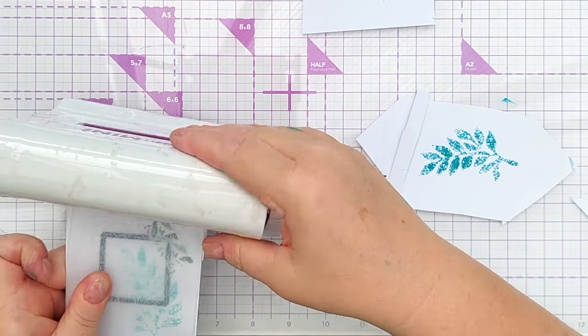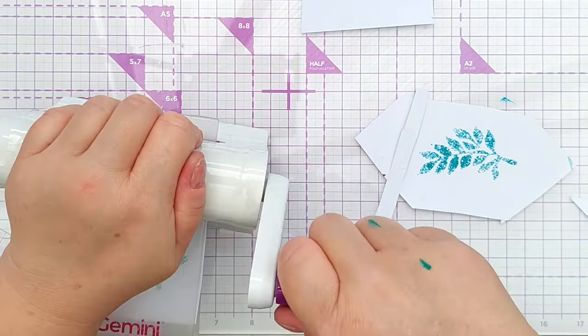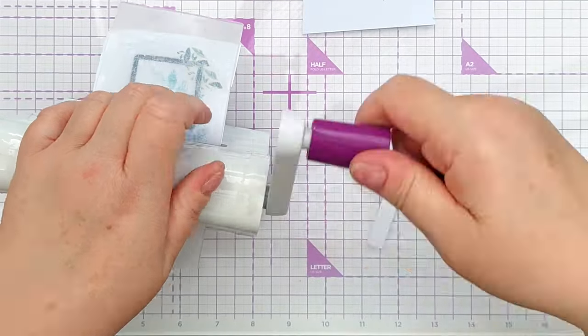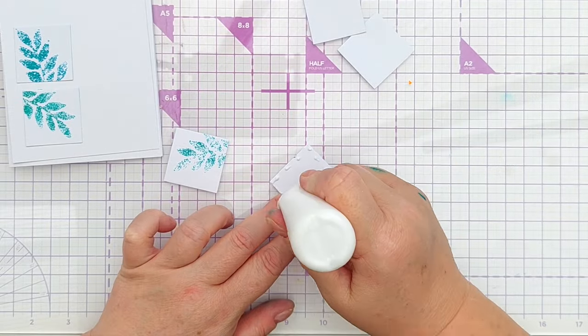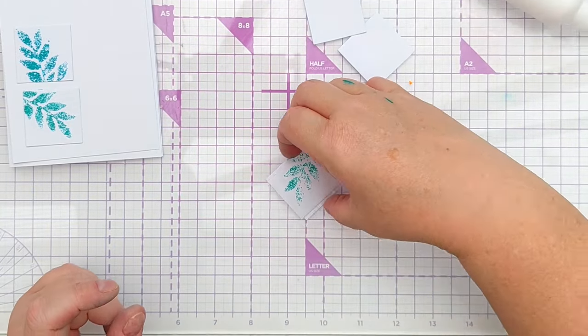I did want to give my squares a little bit of dimension so I die cut some squares the same size from some scrap bits of white card which I then stuck to the back of the leafy branchy squares.